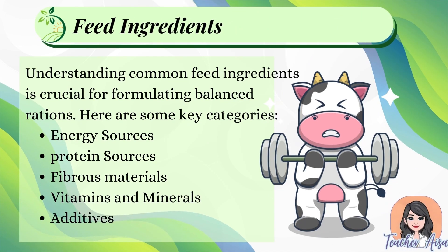Understanding common feed ingredients is crucial for formulating balanced rations. Key categories include: energy sources — grains like corn, sorghum, and rice, and energy-dense byproducts like cassava and molasses; protein sources — plant-based proteins like soybean meal, peanut meal, and copra meal, and animal-based proteins like fish meal and meat and bone meal; fibrous materials — roughages like forages, hay, and straw for gut health; vitamins and minerals essential for physiological functions, often included as premixes; and additives that enhance palatability, improve feed efficiency, or prevent spoilage, such as antibiotics, probiotics, and antioxidants.